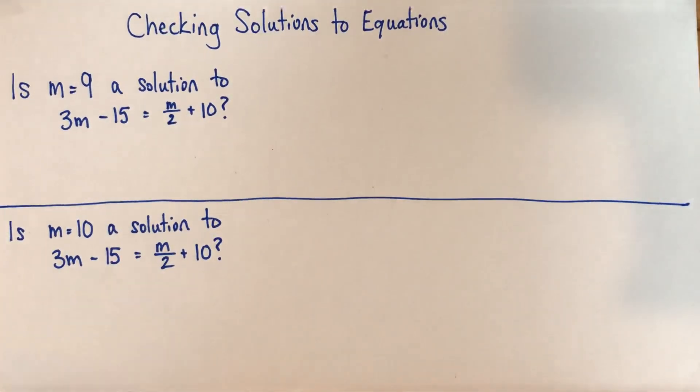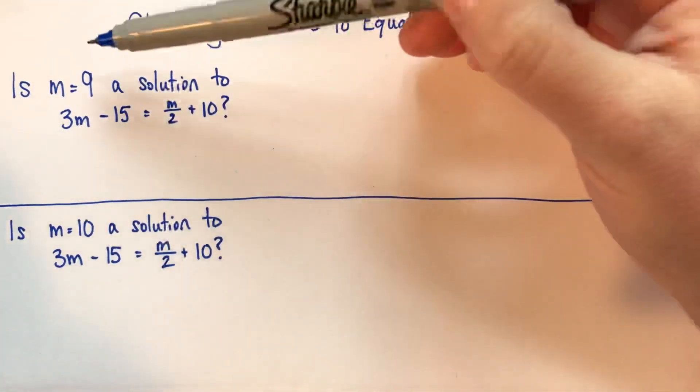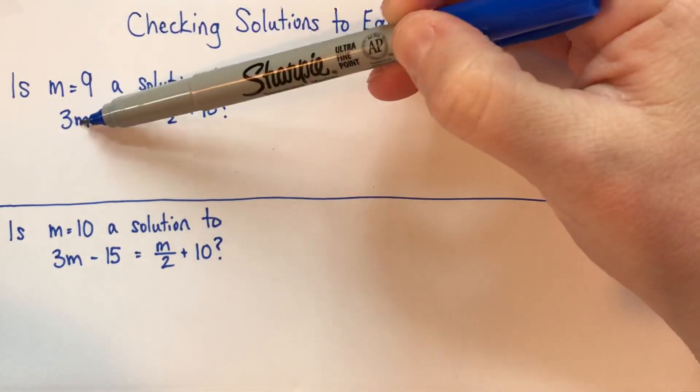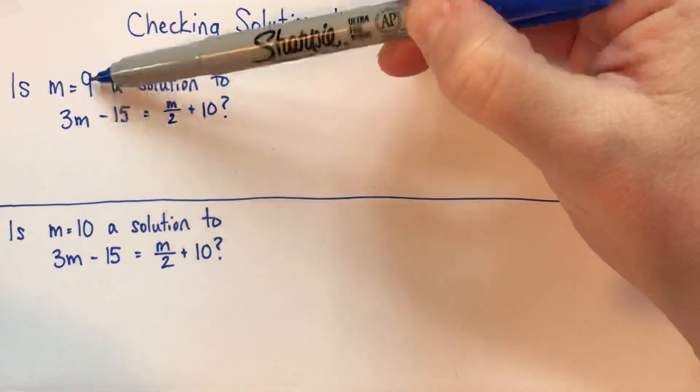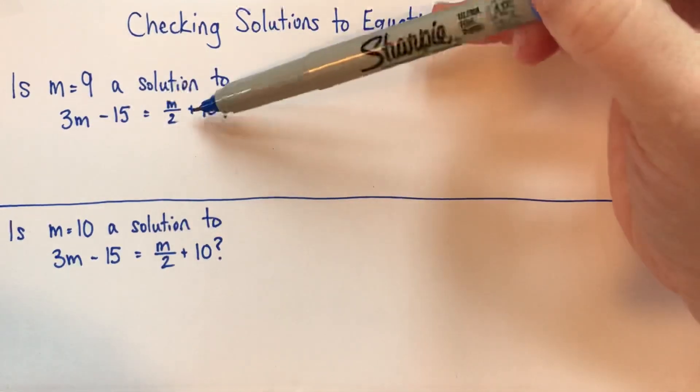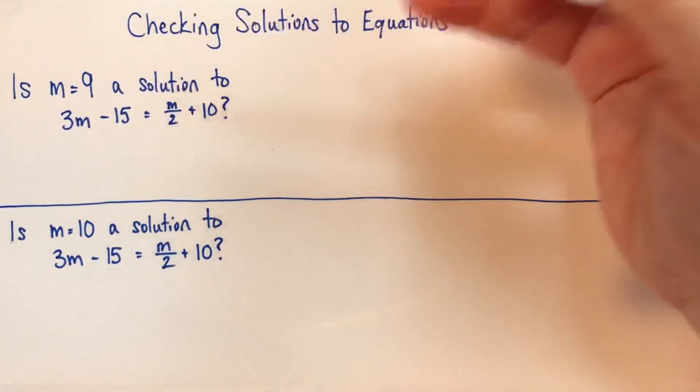So what we're going to do is we're going to check each one. So if it is a solution to the equation, that means that if you replace the m's with 9, if you substitute it, m equals 9, into the equation, then the two sides of the equation would be equal.